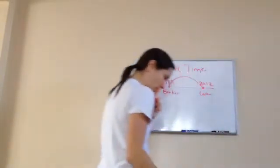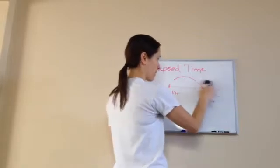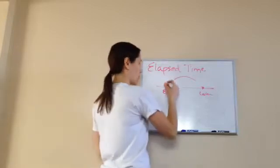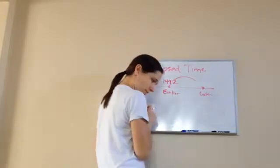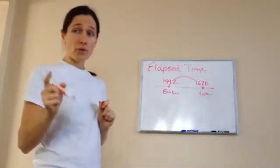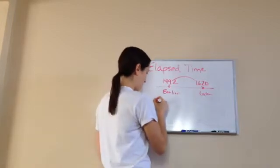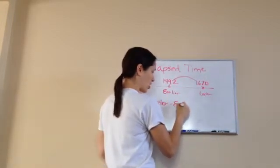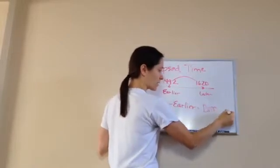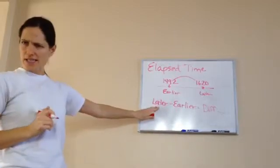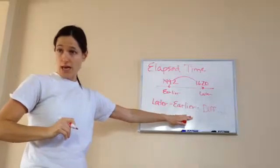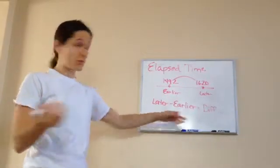Let's look at one of these problems. Here's the question: how many years were there from 1492 to year 1620? The way we're going to be working these problems is we're going to say the later minus the earlier equals the difference.